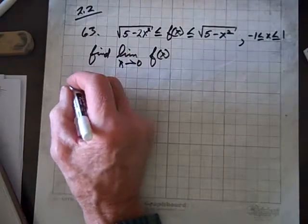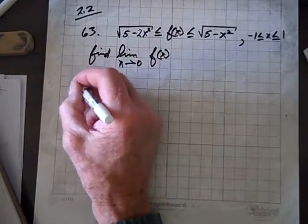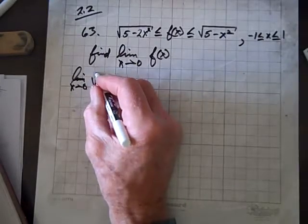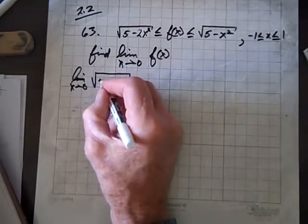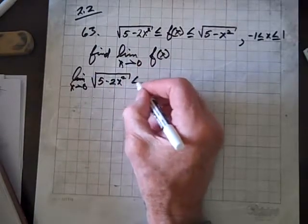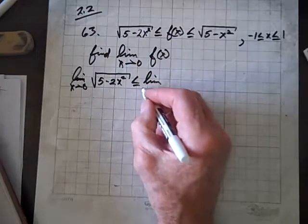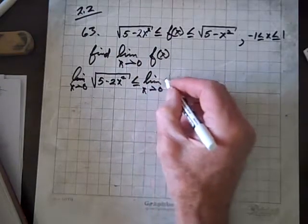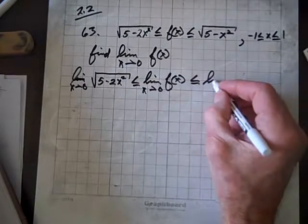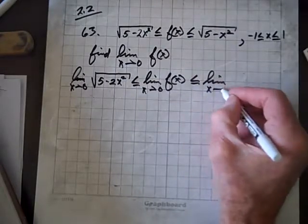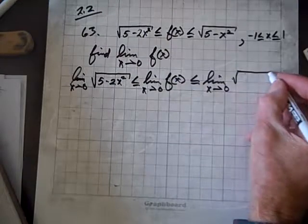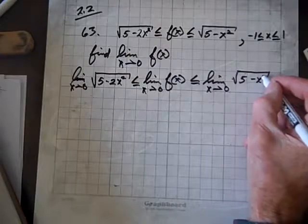So, we'll take the limit as x goes to 0 of 5 minus 2x squared, which is less than or equal to the limit as x goes to 0 of f of x, which is less than or equal to the limit as x goes to 0 of the square root of 5 minus x squared.